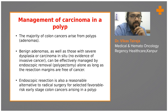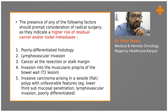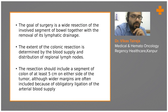Category 4 is tumor size and gross tumor configurations. For carcinoma in a polyp, when they are benign adenomas with severe dysplasia or carcinoma in situ, they can be effectively managed by polypectomy. Endoscopic resection is a reasonable alternative to radical surgery for favorable-risk early-stage colon cancer. The presence of any of the following factors — poorly differentiated histology, lymphovascular invasion, cancer at the margin of resection, margin positivity, invasion into the muscularis propria (T2 lesion), or carcinoma arising in a sessile polyp with unfavorable features such as lower-third submucosal penetration — should prompt consideration of radical surgery.